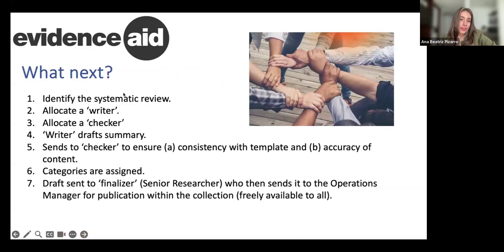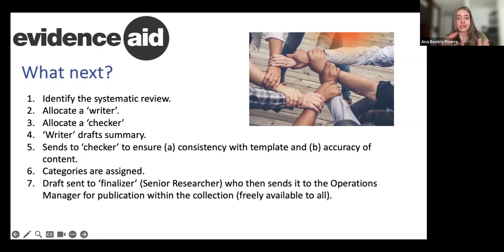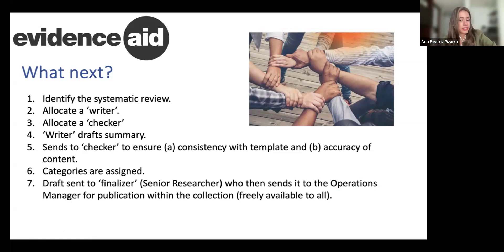What next? First, we identify a systematic review. We allocate a writer who does the main summary, and then we have a checker. The writer drafts the summary and sends it to the checker to ensure consistency with the template and accuracy of the content. Then categories are assigned and the draft is sent to the finalizer — the senior researcher — who sends it to the operations manager for publication within the collection.